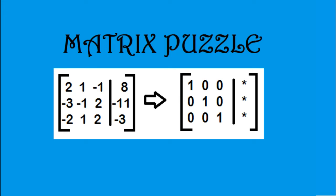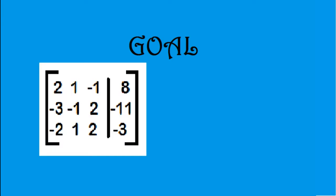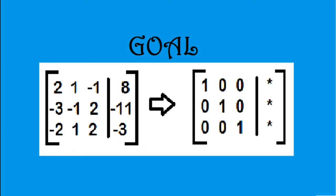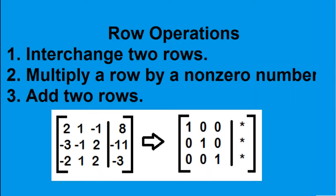The matrix puzzle. The objective of this puzzle is to transform this matrix into this form using row operations. 1: Interchange two rows. 2: Multiply a row by a non-zero number. 3: Add two rows.